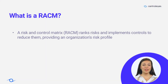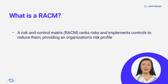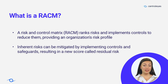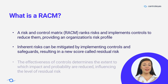A risk and control matrix, or RACM, is a valuable tool for ranking risks and implementing controls to mitigate them. It visually represents potential risks and the protective measures taken to reduce them, providing an overview of an organization's risk profile. Inherent risks exist inherently in assets, but controls and safeguards can be implemented to lower them, resulting in a new score known as residual risk. The effectiveness of these controls determines the extent to which the impact and probability of risks are reduced, thus influencing the level of residual risk.